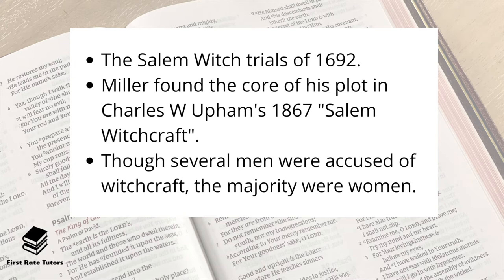Most of the accused were found guilty on controversial and very questionable evidence. The afflicted would claim an apparition of the accused had attacked them, and since the courts decided that the devil needed a person's permission to take bodily form, the accusations were considered believable. Some confessed, usually after being very unpleasantly cross-examined or after condemning testimony was given against them from other self-confessed witches. Discoveries of puppets, ointments, horoscopes, or books on psalmistry were also considered as evidence. Though several men were accused, the majority were women, as they were considered the weaker gender and therefore more susceptible to the devil.